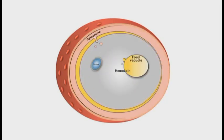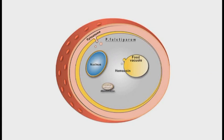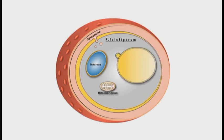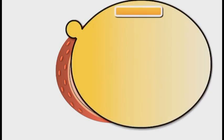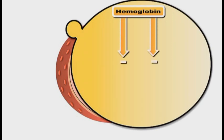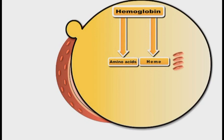Malaria is a disease which results from infection with plasmodium parasites. This parasite is dependent on the host's hemoglobin to obtain its basic nutritional needs. Globin chains provide the essential amino acids, but heme residues are toxic to the parasite.